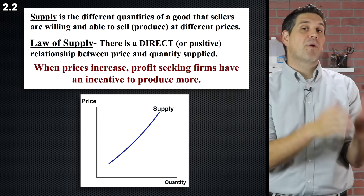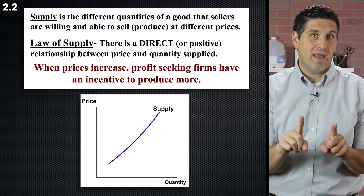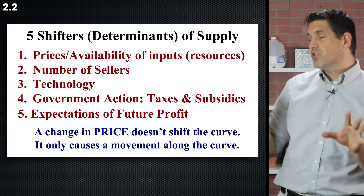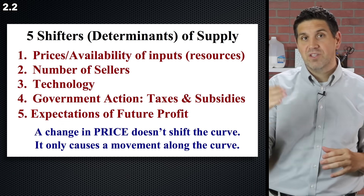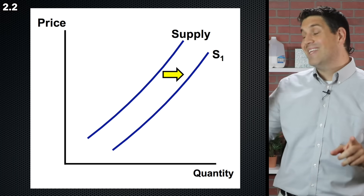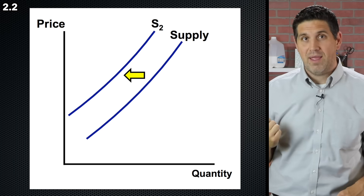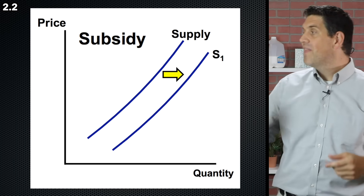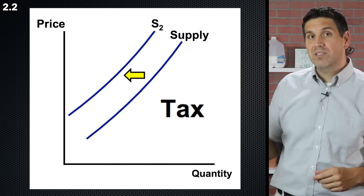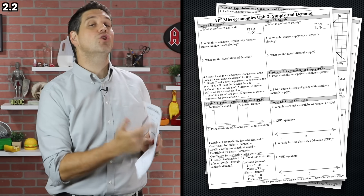Topic 2.2 is supply — we're talking about production and producers. It has an upward sloping supply curve showing a direct relationship between price and quantity supplied. The reason it's upward sloping is because an increase in price gives producers an incentive to produce more because they can make more profit. Notice the price of the product does not shift the supply curve, but the price of resources — the inputs to producing the product — does shift it. An increase in supply is always a shift to the right; a shift up is actually a decrease. A subsidy shifts supply right; a tax on producers shifts supply left.